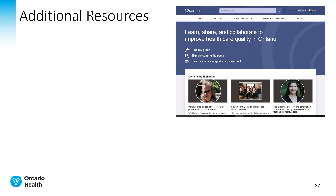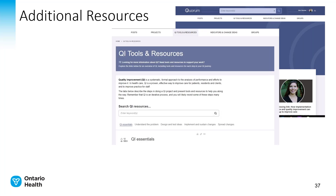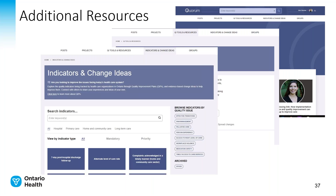Here's where you can go for some additional resources on diagnostics. On Quorum, there is a page — Learn, Share and Collaborate to Improve Healthcare Quality in Ontario — with various sub-pages including a page on QI tools and resources. This will bring you to a place with lots of tools, templates, and processes that will help you with this very important diagnostic stage of your QI project. There is also a section on indicators and change ideas — once you have a good idea of your root cause and what your diagnostics has shown you, you can then begin to select your indicators. This is a place to look at indicators on the quality improvement plans and change ideas gathered from past QIPs that organizations have attempted. It's a great place to start before you begin to dig into your own work.